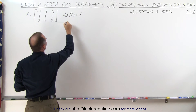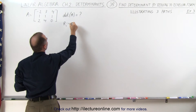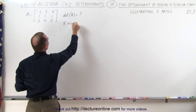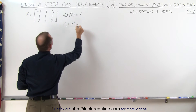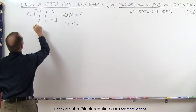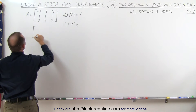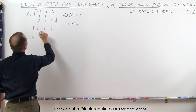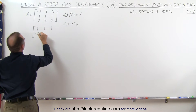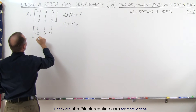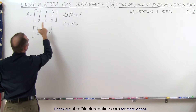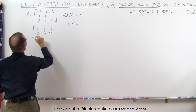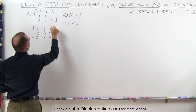So we interchange row 1 and row 2, which gives us the following matrix: 1, 1, 1 in the first row; negative 2, 3, and 4 in the second row; and 2, 4, and 0 in the third row.